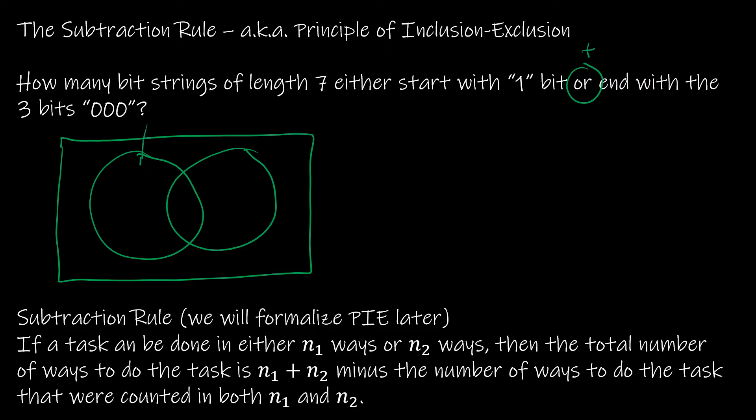So in this circle, I'm going to put bits that start with 1. And in this circle, I'm going to put bits that end in 000.